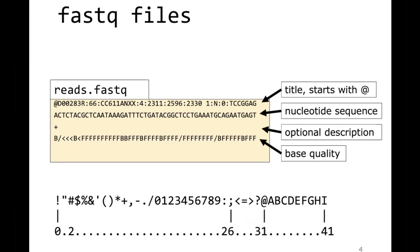The FASTQ file contains records of sequence reads, and each record consists of four lines. The first line is the title of the sequence read — for Illumina data, this typically contains information about where the spot was on the flow cell, among other things, and usually also the barcode. The second line is the actual nucleotide sequence. The third line usually starts with a plus sign and is there mainly for backward compatibility, containing room for an optional description.